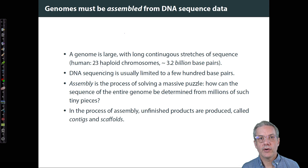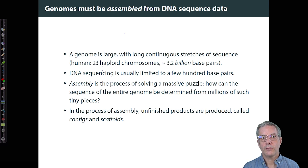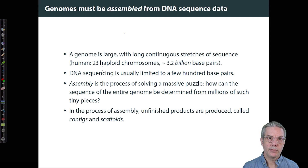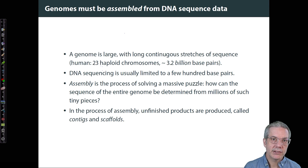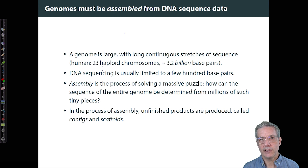We know that a genome is very large. It's made up of long, contiguous stretches of sequence that are organized into chromosomes. In the human genome, there are 23 haploid chromosomes and 3.2 to 3.3 billion base pairs. But DNA sequencing is usually limited to a few hundred base pairs using most technologies, although there are some recent technologies that read truly long sequences up to tens of thousands of bases.